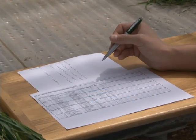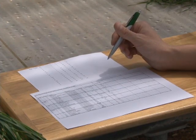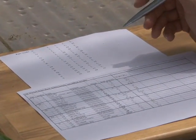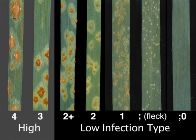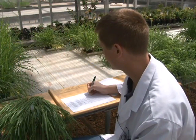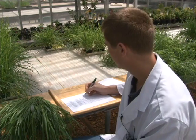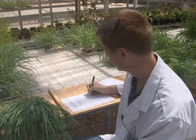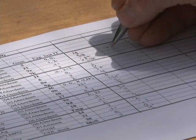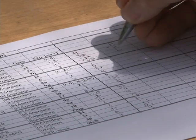Once you have determined the infection type for the 20 differential lines, the next thing you need to do is determine whether each infection type is high or low. For example, the first infection type scored was a 4, which is a high infection type. The second was a 3+, also a high infection type. The third was a FLEC 1-, which is below a 2, so it's a low infection type. The last was a 2+, which is still a low infection type.